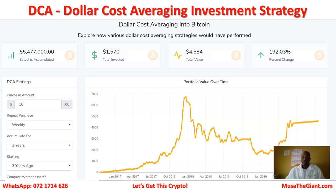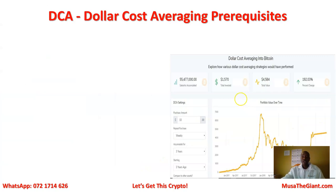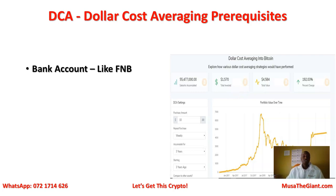Before we get to the meat and potatoes, let's look at what you need in order to successfully participate in this Dollar Cost Averaging strategy. The first thing you need is a bank account — like FNB, it can be any bank account. You need to be able to send your money from your bank to your Bitcoin wallet, like Luno, Valr, Numi, Coinbase, or many other wallets. Once you've sent money from your bank to your Bitcoin account, you'll be able to buy some Bitcoin, as I'll show you exactly how to do.